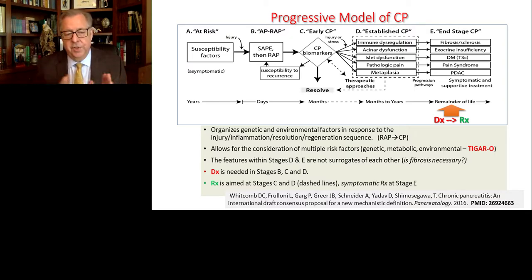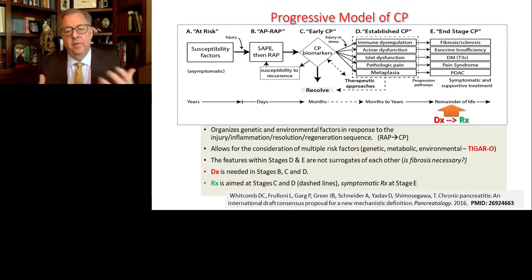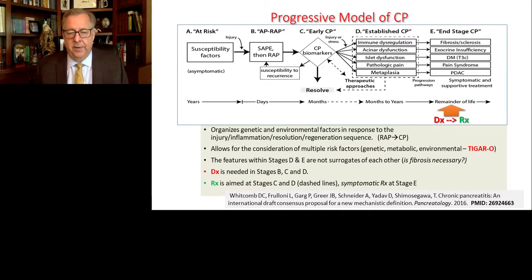This model allows for the consideration of multiple risk factors — some are genetic, some are metabolic, some are environmental. We've organized these into a system called TIGER-O, which is an acronym I'll talk about on the next slide.